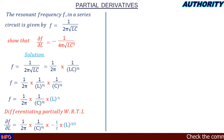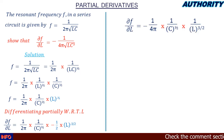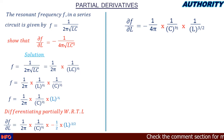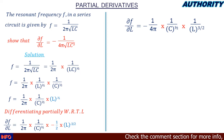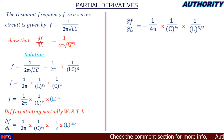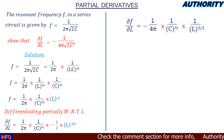We rewrite L^(−3/2) as 1 / L^(3/2). Multiplying (−1/2) by (1 / 2π) gives −1 / (4π). So the partial derivative becomes −1 / (4π) × (1 / C^(1/2)) × (1 / L^(3/2)).